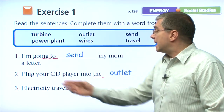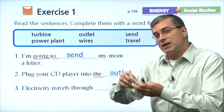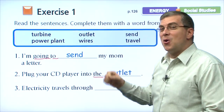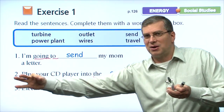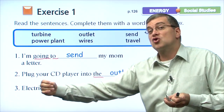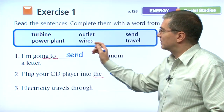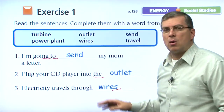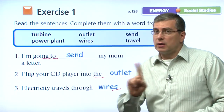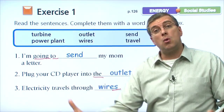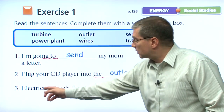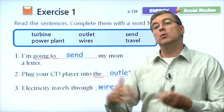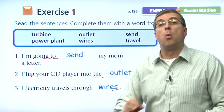Number three: electricity travels through blank. We talked about what piece of metal — a long piece of metal surrounded by plastic — electricity travels through. That's wires, isn't it? Notice we're using the plural S because we're talking about wires generally, not one wire but all wires. Electricity generally travels through wires. So we use the plural form: wires.